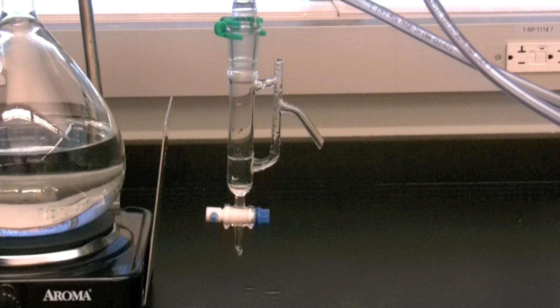Fill the receiver with distilled water such that the water level is at least as high as the top of the lower outlet. The metal heat shield should be between the receiver and the hot plate.